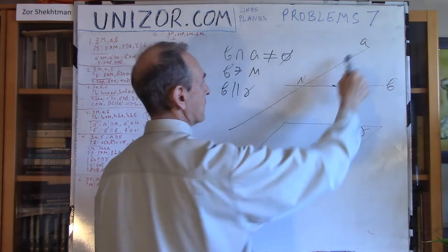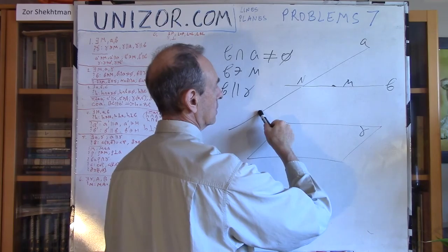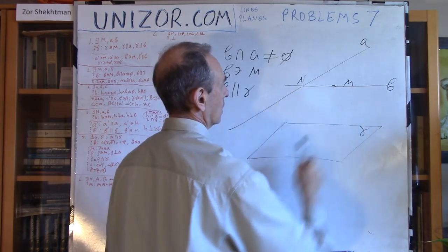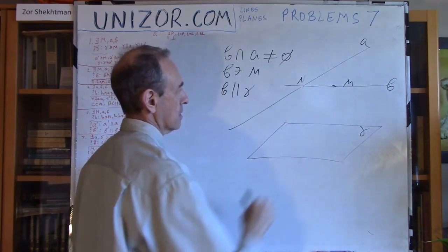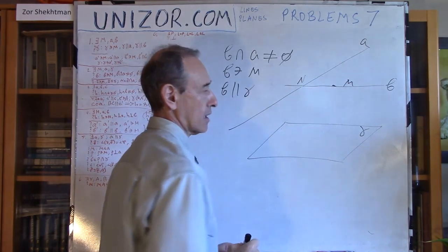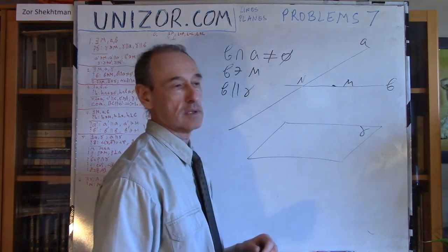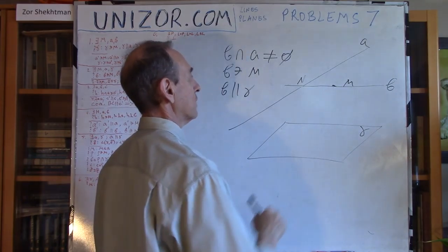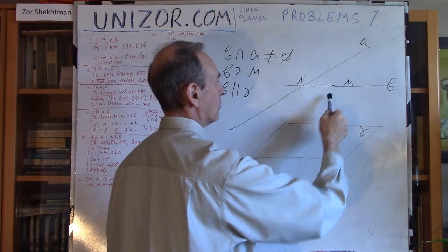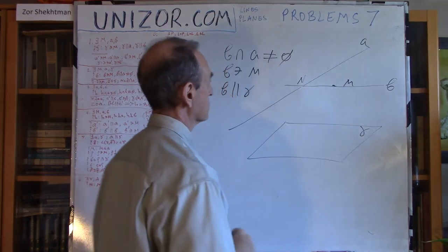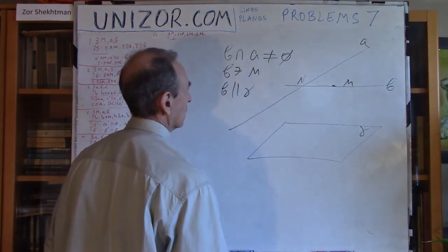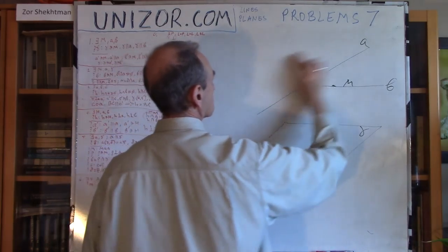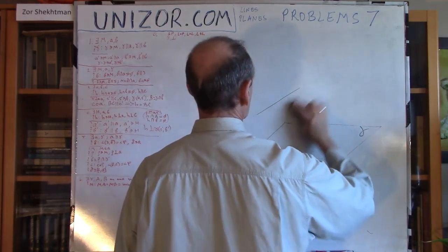Obviously, if A is parallel to plane gamma, it will not intersect the auxiliary plane I built, and there will be no solution. Also, if A goes through M, there will be an infinite number of solutions. But these are not really general cases — we are talking about the general case, and that's what it is.